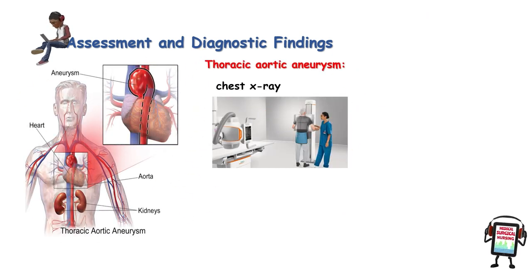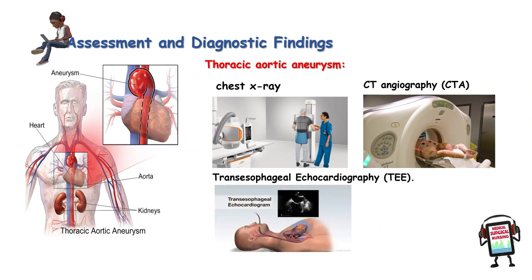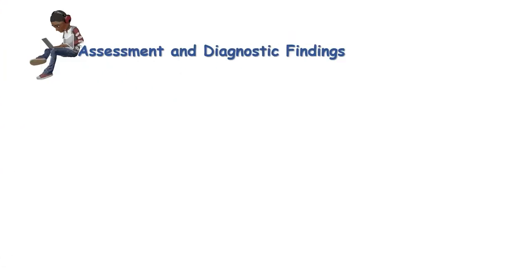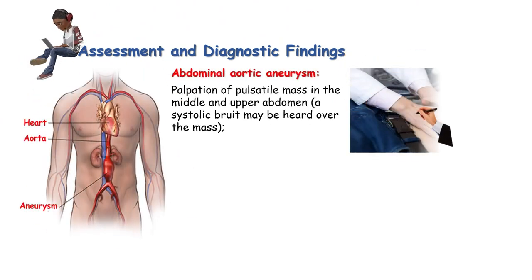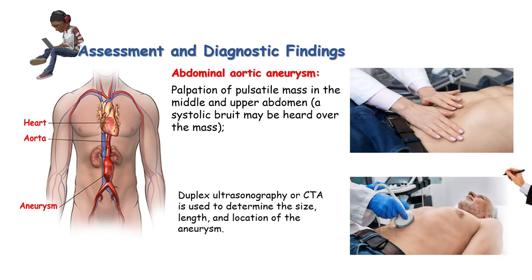Assessment and diagnostic findings for thoracic aortic aneurysm include chest X-ray, computed tomography angiography (CTA), and transesophageal echocardiography. These examinations are used to produce pictures of major blood vessels throughout the body and help identify abnormalities. For abdominal aortic aneurysm, palpation of a pulsatile mass in the middle and upper abdomen and auscultation for abdominal or femoral bruits may be useful. Duplex ultrasonography or CTA is used to determine size, length, and location of the aneurysm.